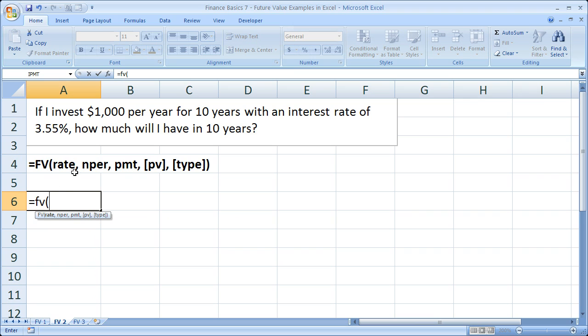Now the first thing we need is the rate. The rate is going to be the interest rate. Pretty easy for this example. 0.0355. Now remember, put it as a decimal, not a whole number. Comma. Now the number of periods. Well, we're keeping everything simple for these examples, so the number of periods here is going to be 10 years. So, simply 10.